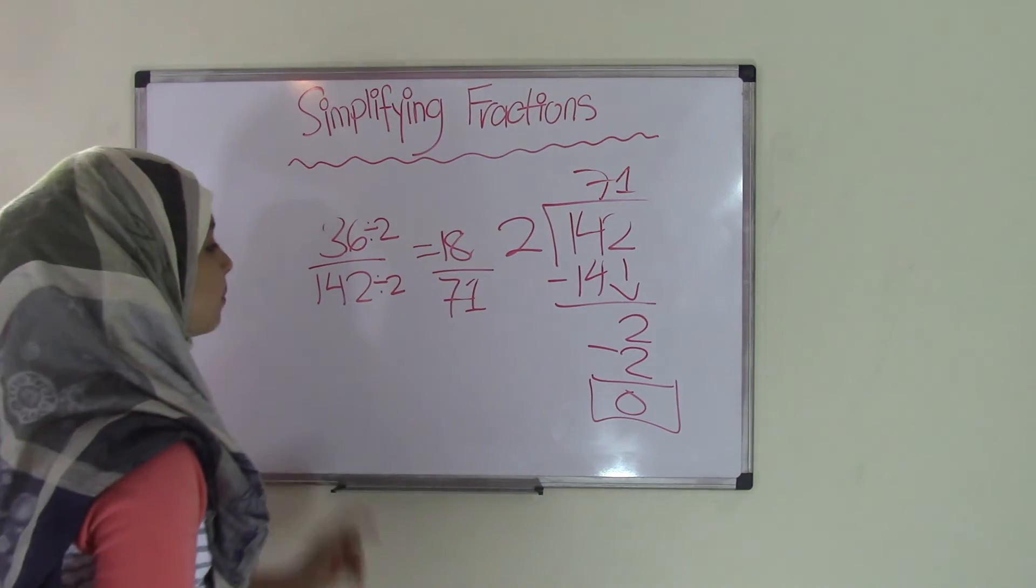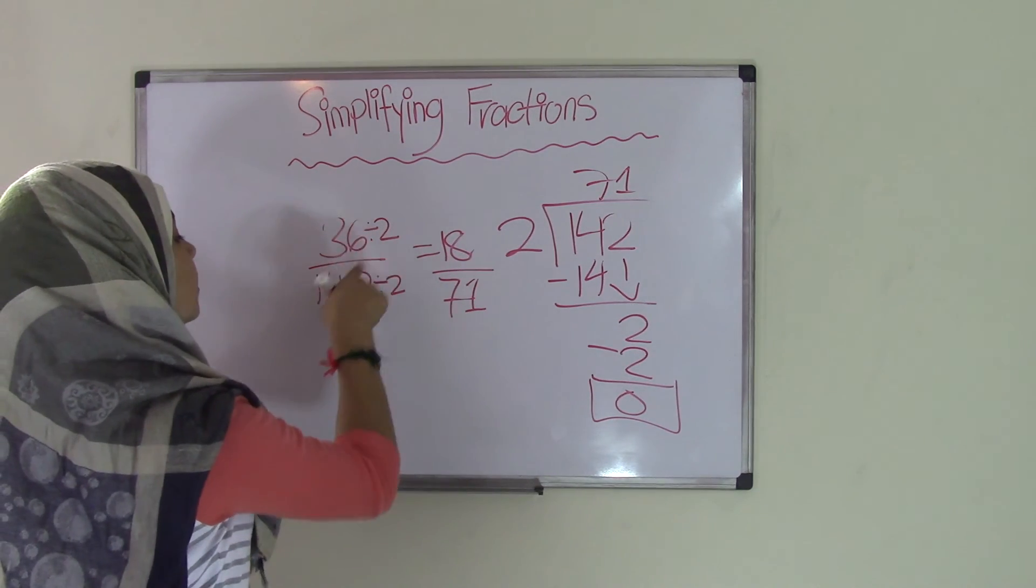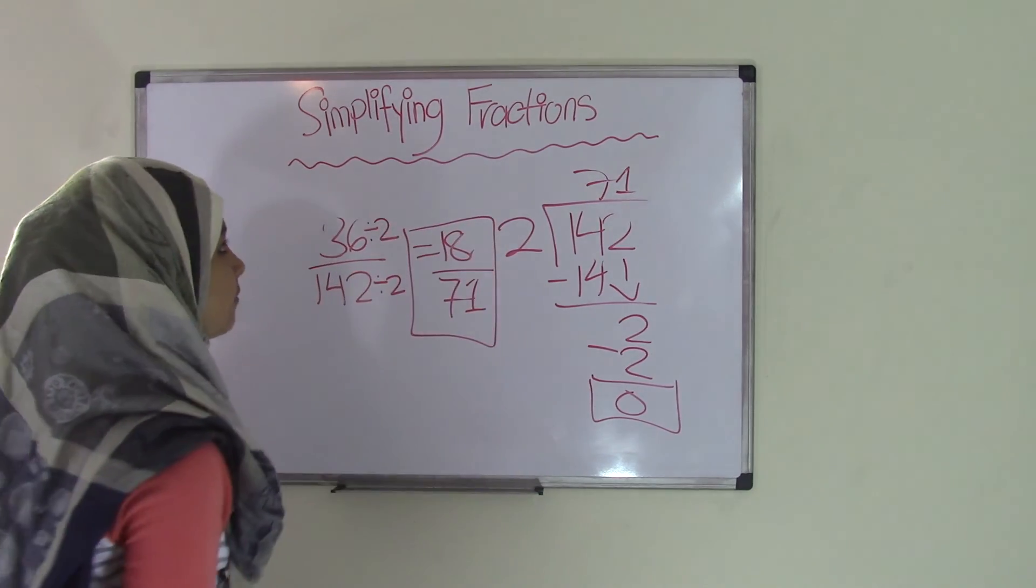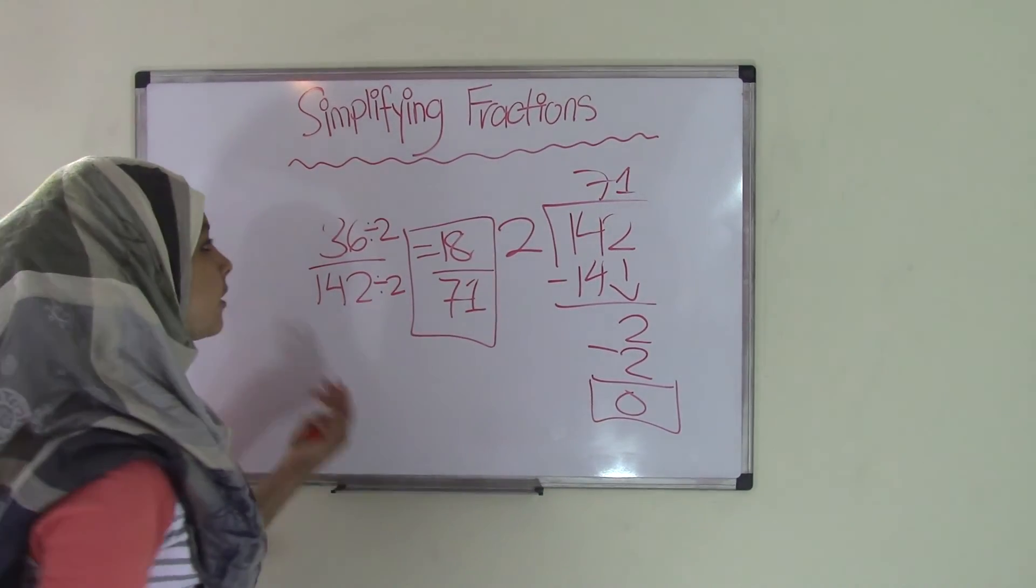So that means the simplified terms for 36 over 142 equal 18 over 71. So that's all I have for this topic today.